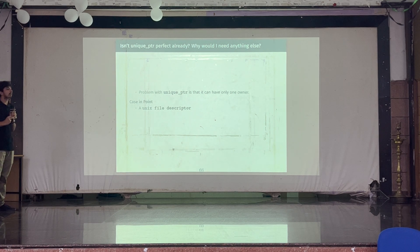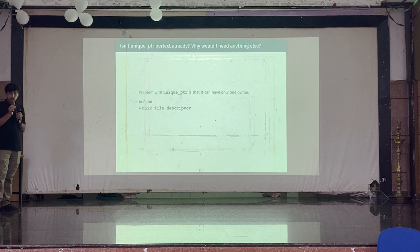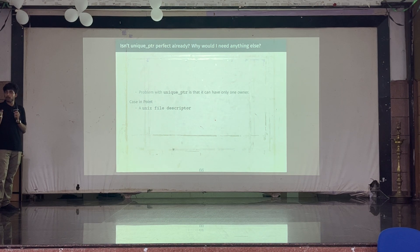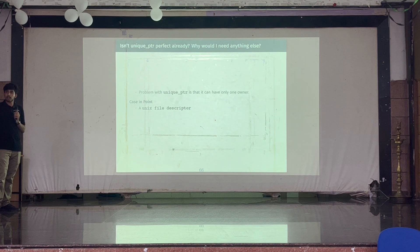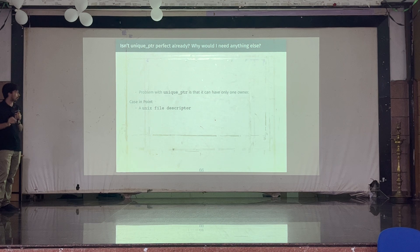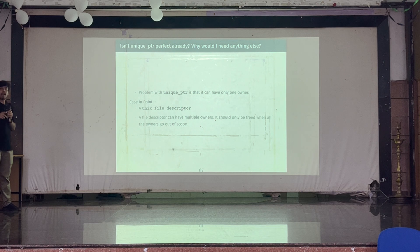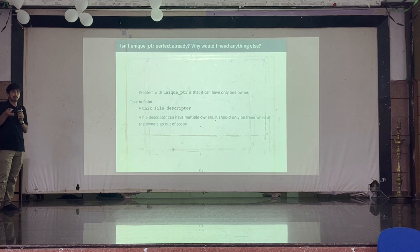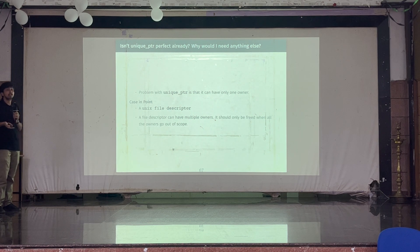A perfect example of where unique pointer doesn't work well is a Unix file descriptor in Linux. In Linux, when you want to read or write a file, you call open(), which returns an integer called a file descriptor. The OS maps that integer to the file and lets you use it for reading and writing. A file may have multiple owners — I can open the file in multiple places, have multiple variables modifying it. It should be able to have multiple owners, but with unique pointers you can't model that.